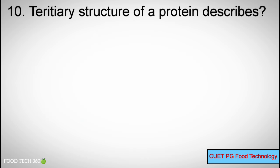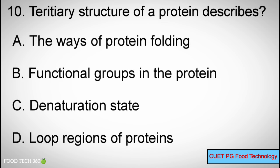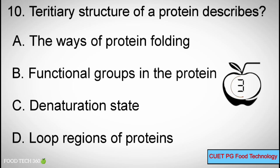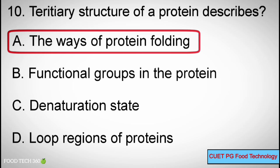Question number 10. Tertiary structure of a protein describes — Options: A. The way of protein folding, B. Functional groups in the protein, C. Denaturation state, D. Loop regions of proteins. Correct answer: A. The way of protein folding.